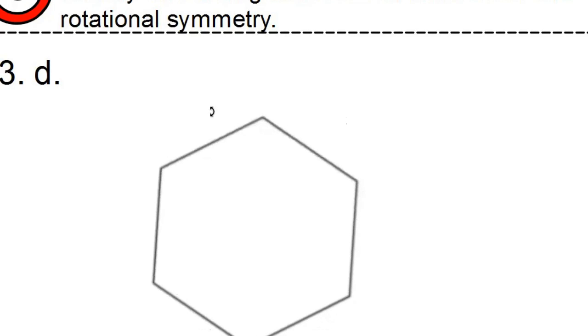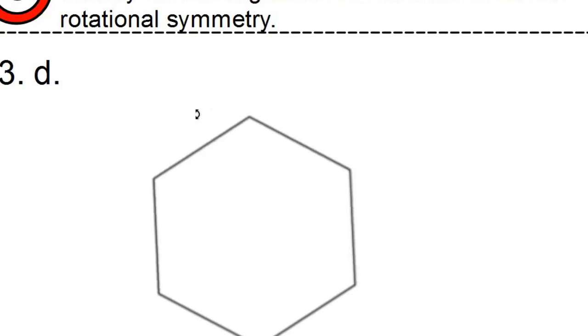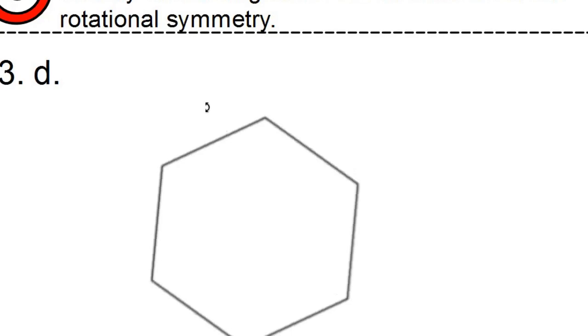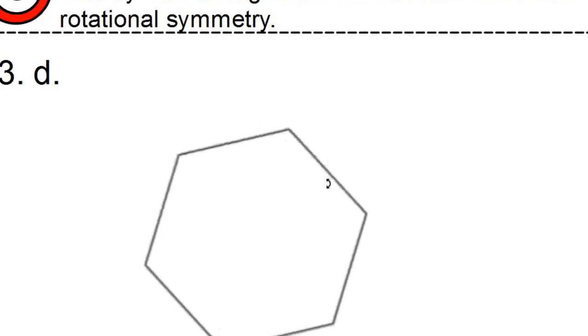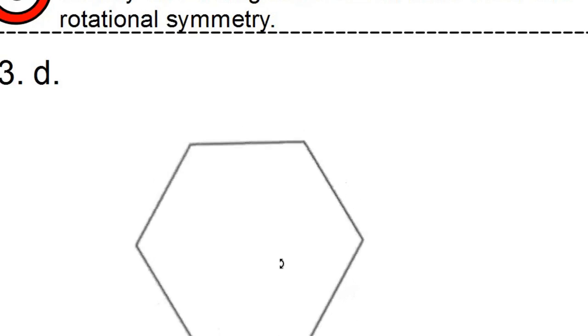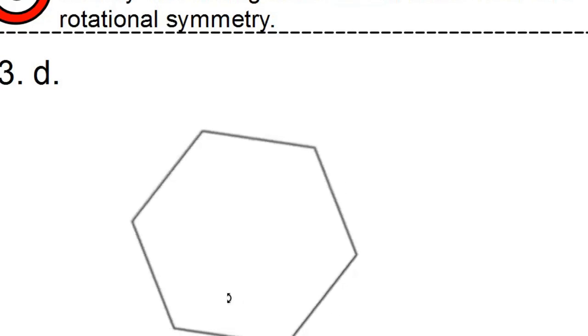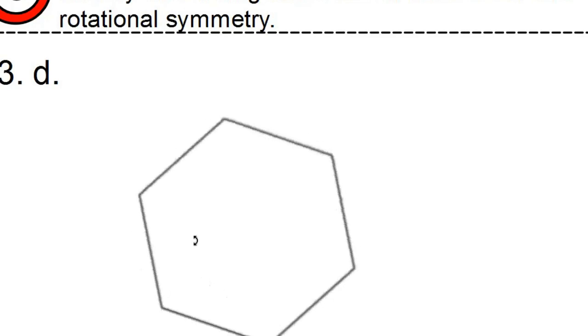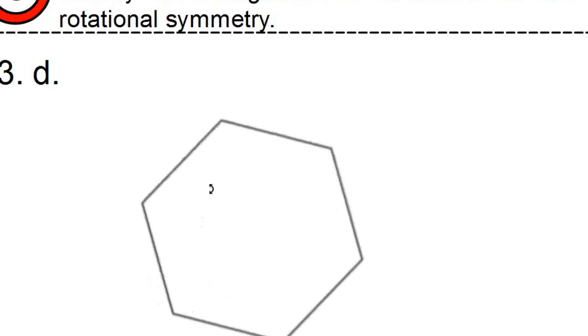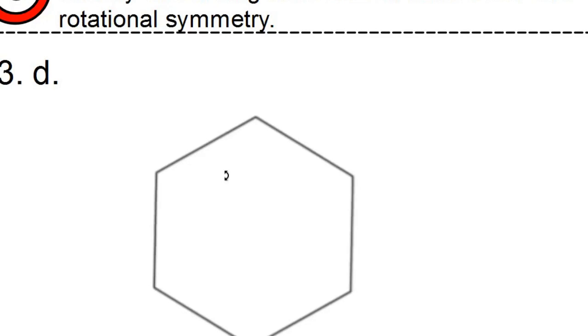Now how many degrees was that? I think we should employ our little turn it around and see how many times we can click it around here. So here's the starting position. I can go around once, twice, three times, four times, five times, and six times. And I'm back where I started at.